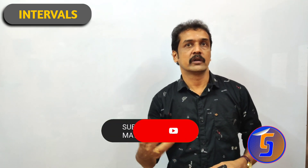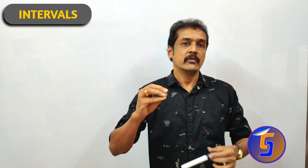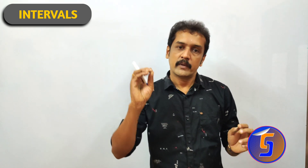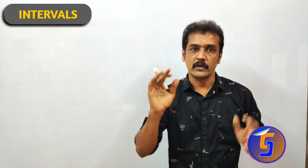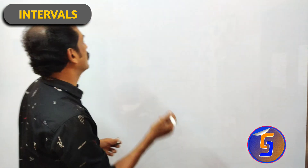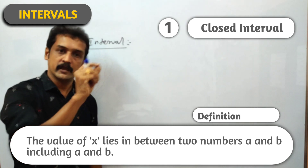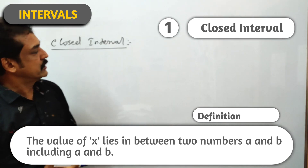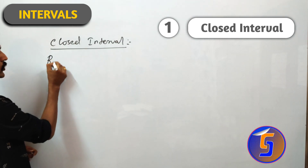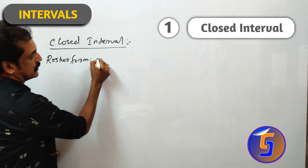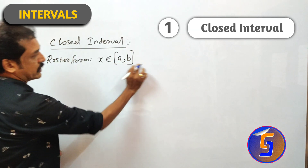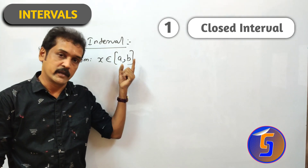What is an interval? Closed interval definition: the value of x lies in between two numbers a and b, including a and b, is called a closed interval. It can be denoted in roster form as x element of closed interval [a, b]. The square bracket denotes a closed interval.